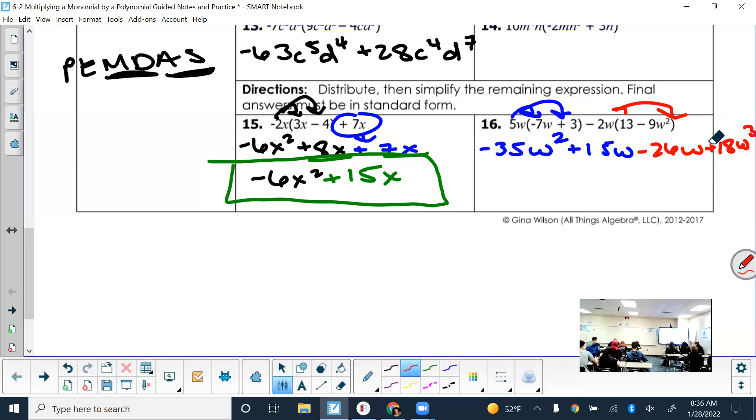So questions about that? After distributing, what do you check for? Any like terms. Are there any? What are they? 15w and negative 6w. And what do those combine to give me? Negative 11w. Don't forget that negative. Does the w squared term have anything to combine with? So let's bring it down. What about the w cubed term? So let's bring that down also. Now, am I finished? Should I box this up?